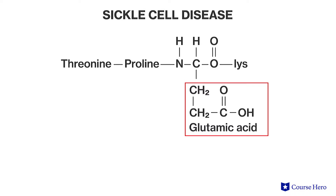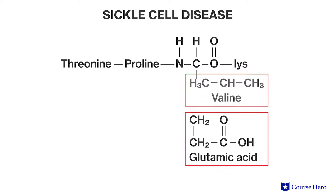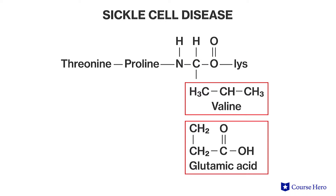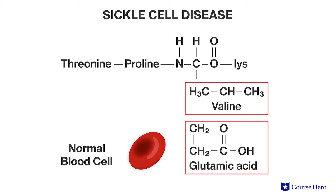A change in just one amino acid can result in a protein losing its function. For example, sickle cell disease is caused by the substitution of valine for glutamic acid in the protein hemoglobin. This protein carries oxygen in red blood cells. This one change alone results in blood cells that are sickle in shape. These blood cells tend to clog in tiny blood vessels, resulting in inadequate blood flow in those affected.